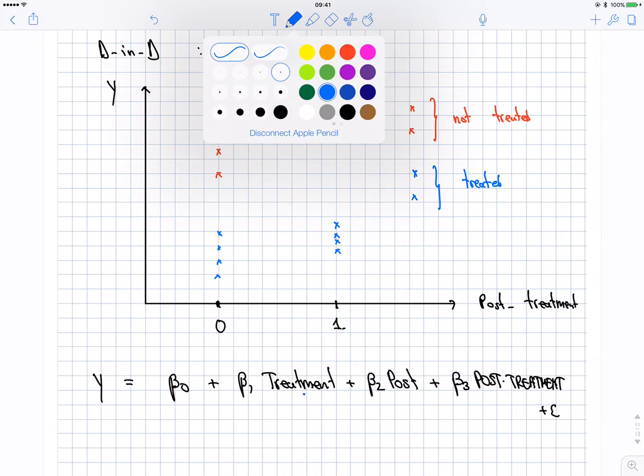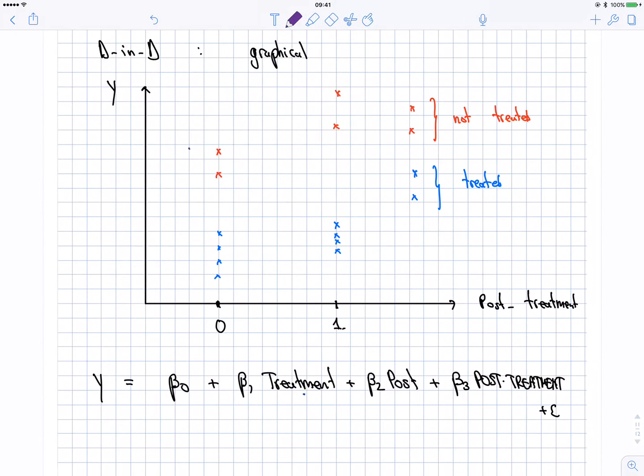So if you think about this data, I can dissect this data into some nice shapes. This group of people here, what do I know about this group of people here is that the treatment is equal to zero. They're not getting any treatment.